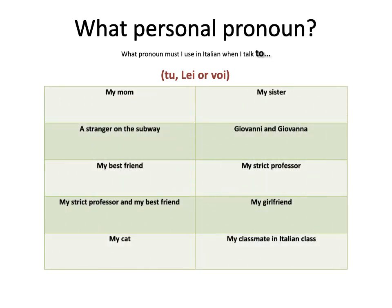So let's think about these cases. If I want to talk to my mom, do I say tu, Lei, or voi? I think the most common thing is tu — you would talk informally to your mom. How about a stranger on the subway? In Italian you tend to be formal to strangers, so the formal version of 'you' is Lei. If I want to talk to my best friend — it's one person, so I don't use voi. As my best friend I want to be informal, so I use tu.